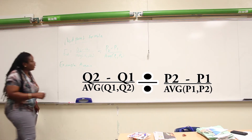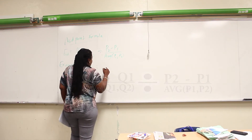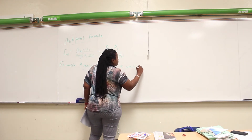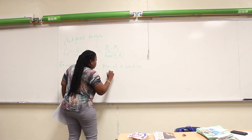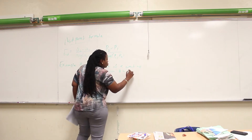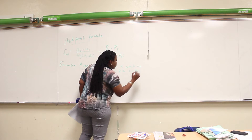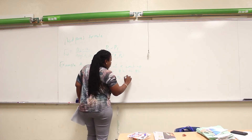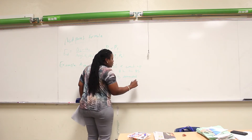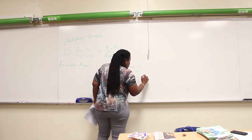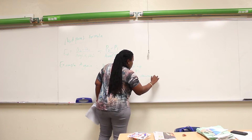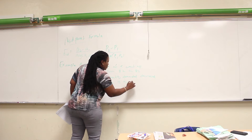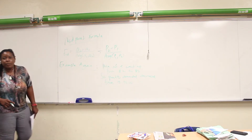So let's do the example again. The price of X went up from 2 to 5. Quantity demanded decreased from 15 to 10. And we're going to use that midpoint formula.